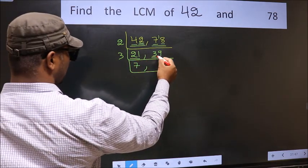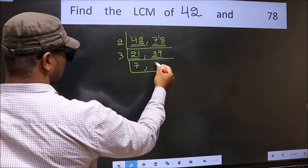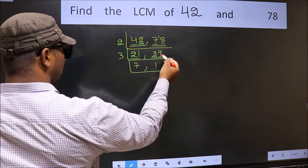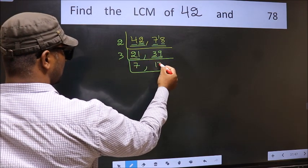So the first number 3, when do we get 3 in 3 table? 3, 1s, 3. The other number 9, when do we get 9 in 3 table? 3, 3s, 9.